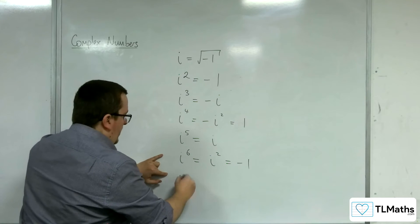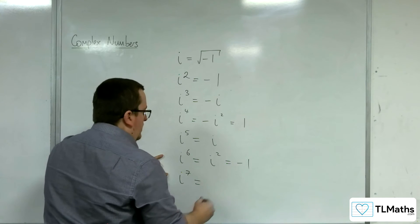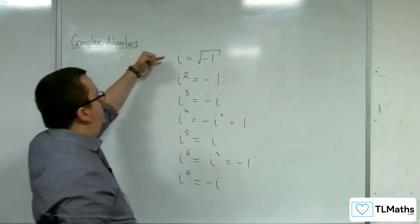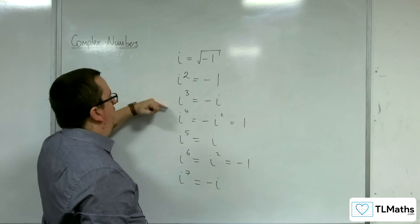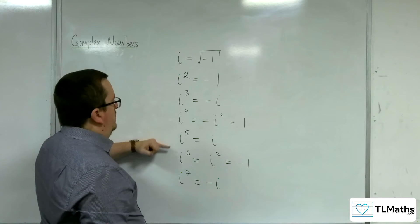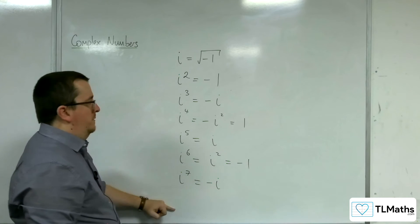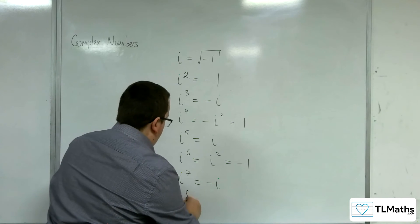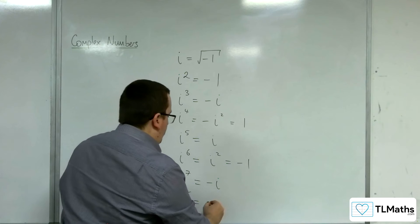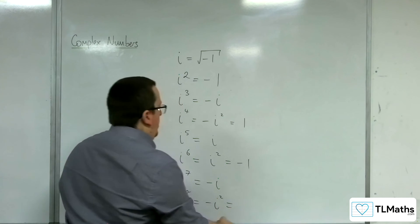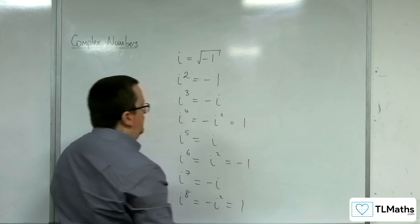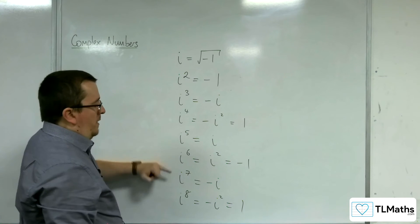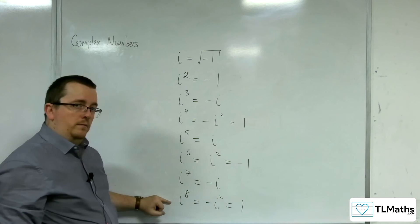And you can keep going. So what have we got? We've got i, minus 1, minus i, 1, and the pattern repeats. i, minus 1, minus i, 1. So i to the 8 is going to be minus i squared, which is the same thing, so 1.